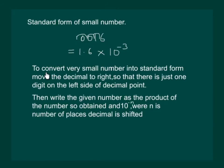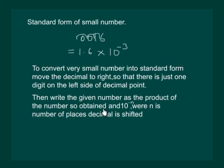Hence, we state that to convert a very small number into standard form, move the decimal to the right so that there is just one digit on the left side of the decimal point. Then write the given number as the product of the number so obtained and 10 to the power of minus n, where n is the number of places the decimal is shifted.